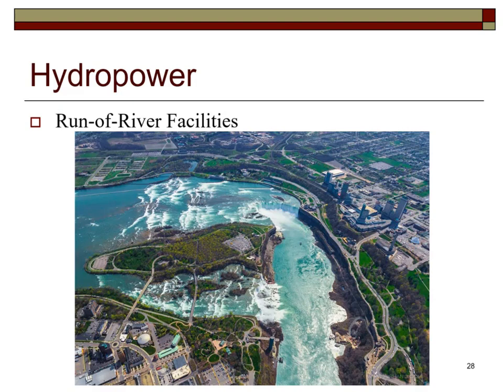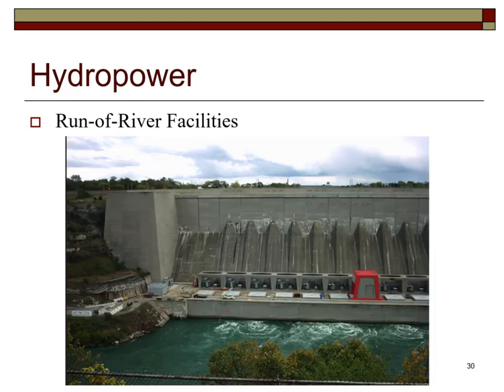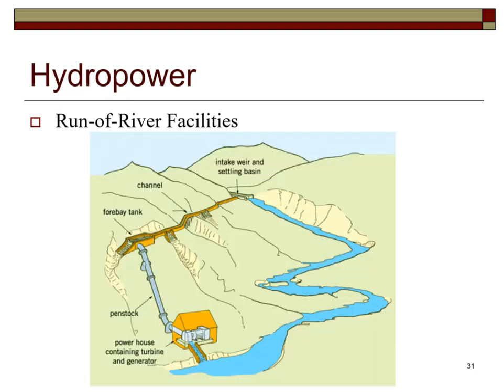Niagara Falls is a run-of-river facility. Run-of-river hydroelectricity is considered ideal for streams or rivers that can sustain a minimum flow or those regulated by a lake or reservoir upstream. A small dam is usually built to create a head pond, ensuring enough water enters the penstock pipes that lead to the turbines at the lower elevation.